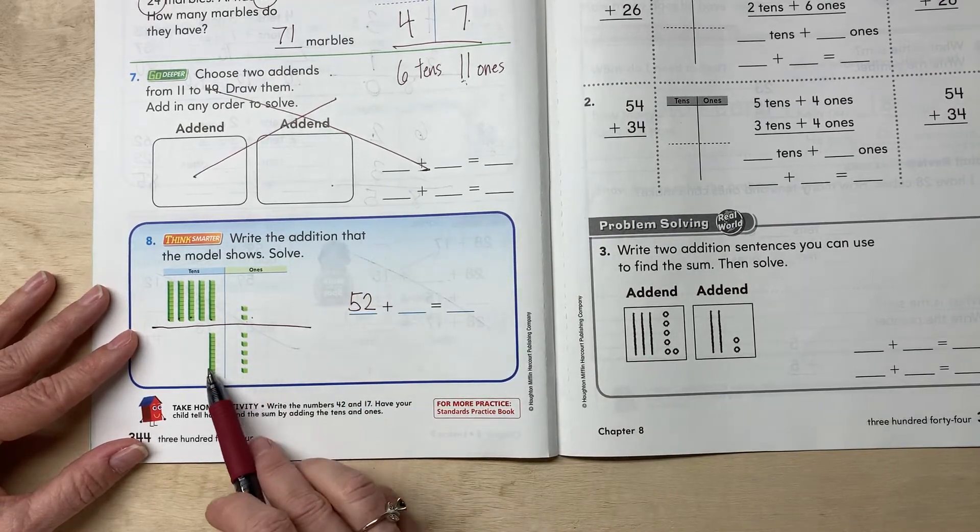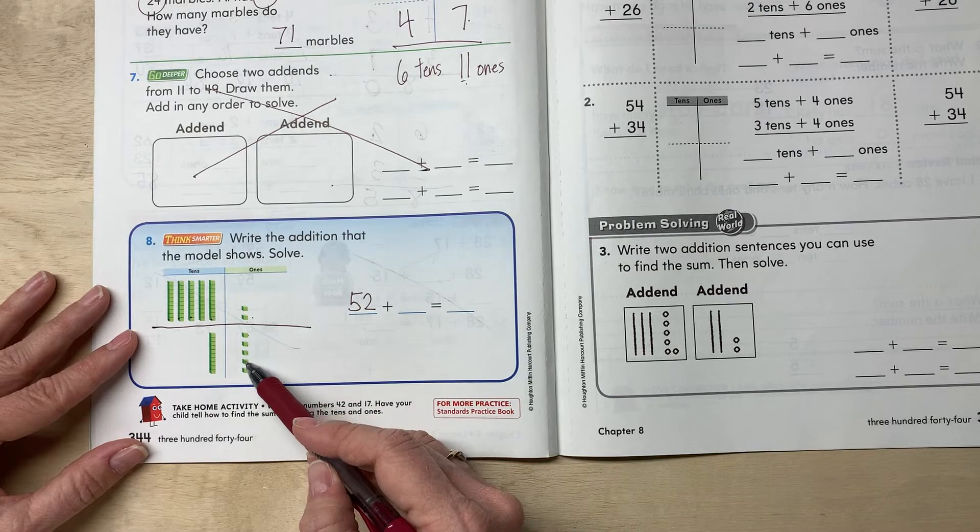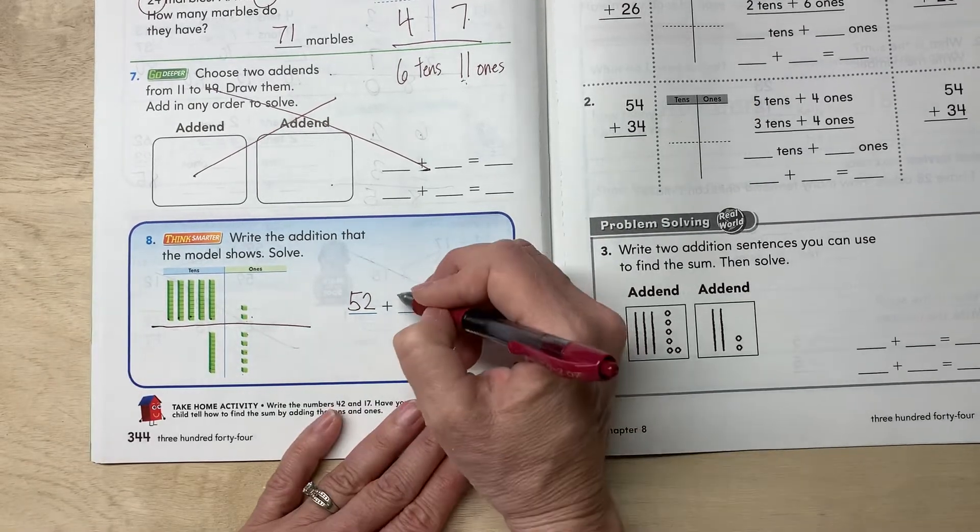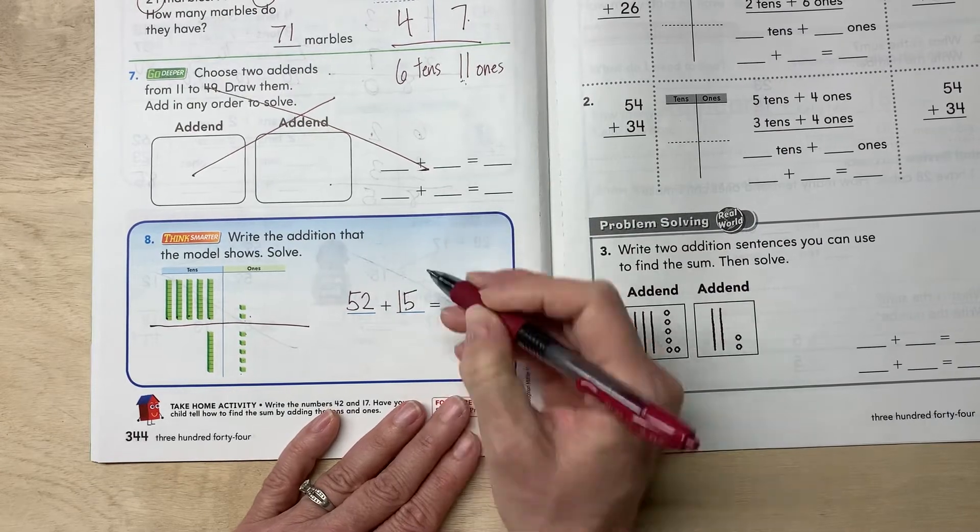And then what number is one, ten, and one, two, three, four, five ones? One, ten, and five ones is what number? One, ten, and five ones is 15.